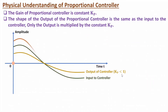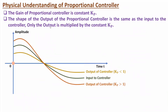If the constant gain Kp is higher than 1, the shape will be similar but the output amplitude will be greater compared to the input. So with a proportional controller, the output shape is the same as the input, and the output is multiplied by constant gain Kp. If Kp is higher than 1, the response is faster; if Kp is lower than 1, the response is slower.